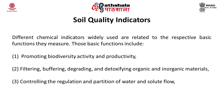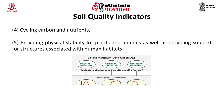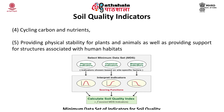Different chemical indicators widely used are related to the respective basic functions and their measures. Those basic functions include promoting biodiversity, activity and productivity, filtering, buffering, degrading and detoxifying organic and inorganic material, controlling the regulation and partition of water and solute flow, cycling carbon and nutrients, and providing physical stability for plants and animals as well as providing support for structures associated with human habitat. All these processes are explained in the figure given below.